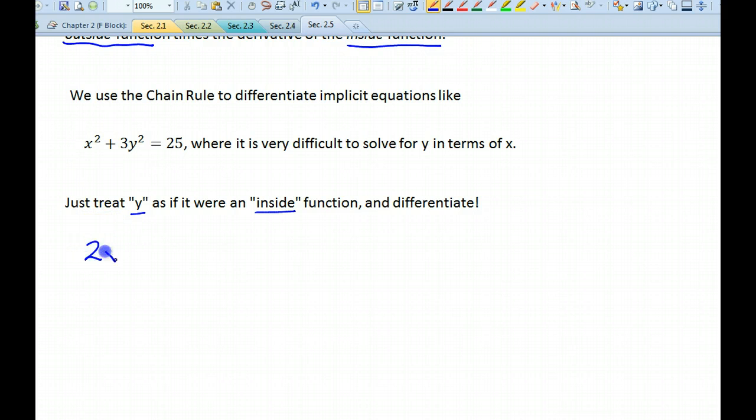The derivative of x squared is 2x. The derivative of 3y squared is 6y. And since y is an inside function, we have to multiply by the derivative of the inside function, which is y prime. And the derivative of 25 is 0.